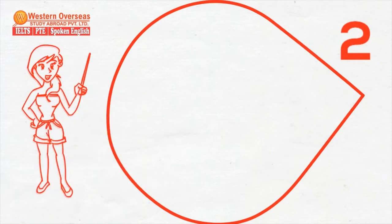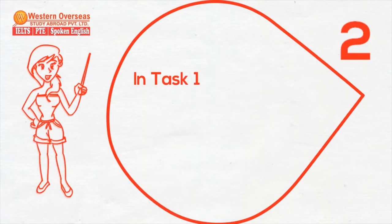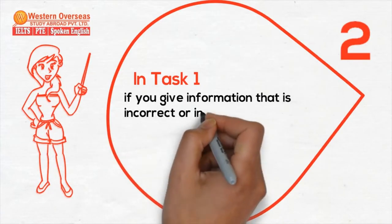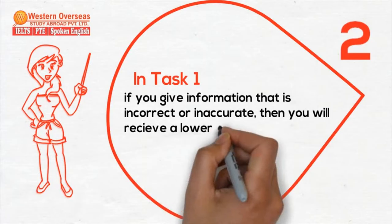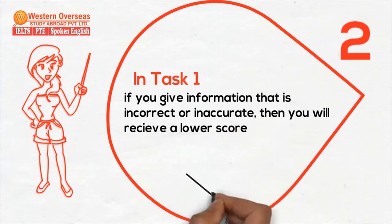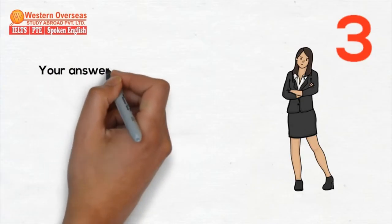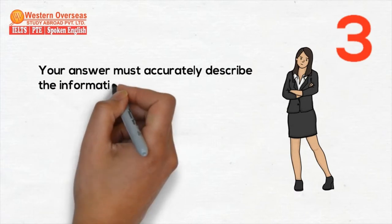Tip number two: in Task 1, if you give information that is incorrect or inaccurate, then you will receive a lower score. Tip number three: your answer must accurately describe the information presented in the graph, chart, or diagram.